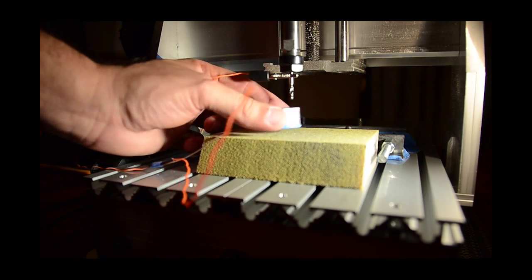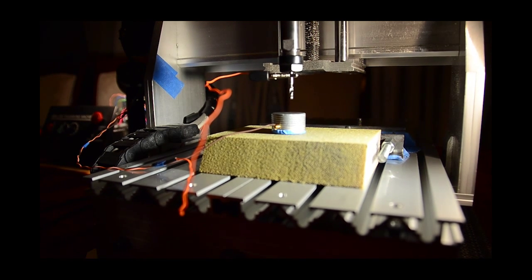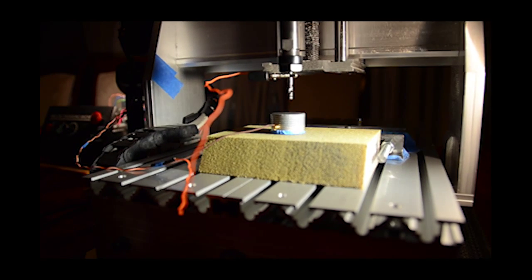By using an alligator clip attached to the bit that I'm zeroing out, I can then use the touch plate widget inside Chili Pepper to execute a touch plate homing cycle.